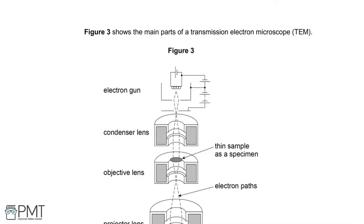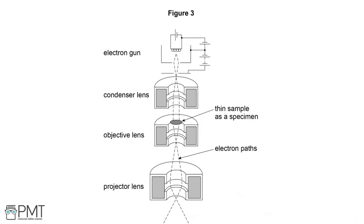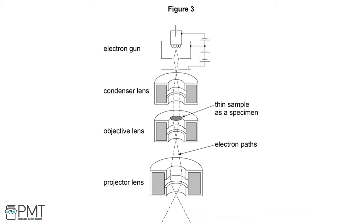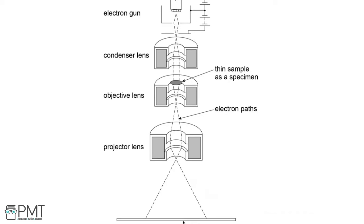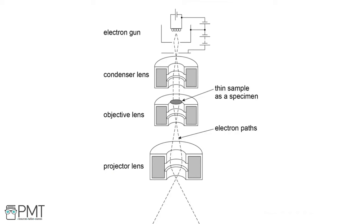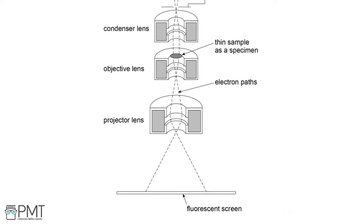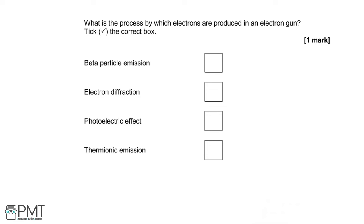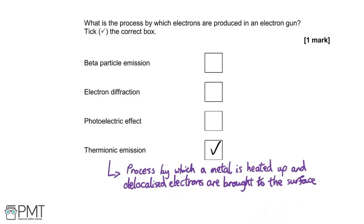Figure 3 shows the main parts of a transmission electron microscope (TEM). Electrons from the electron gun pass through three lens types — condenser, objective, and projector — reaching a fluorescent screen where an image is produced. The process by which electrons are produced in the electron gun is thermionic emission: a metal is heated up and electrons are brought to the surface. Tick that box for your mark.